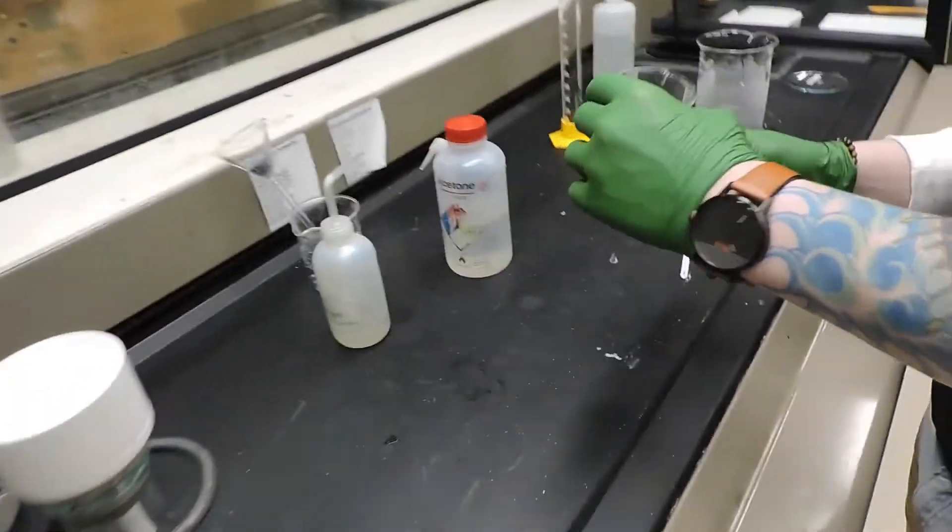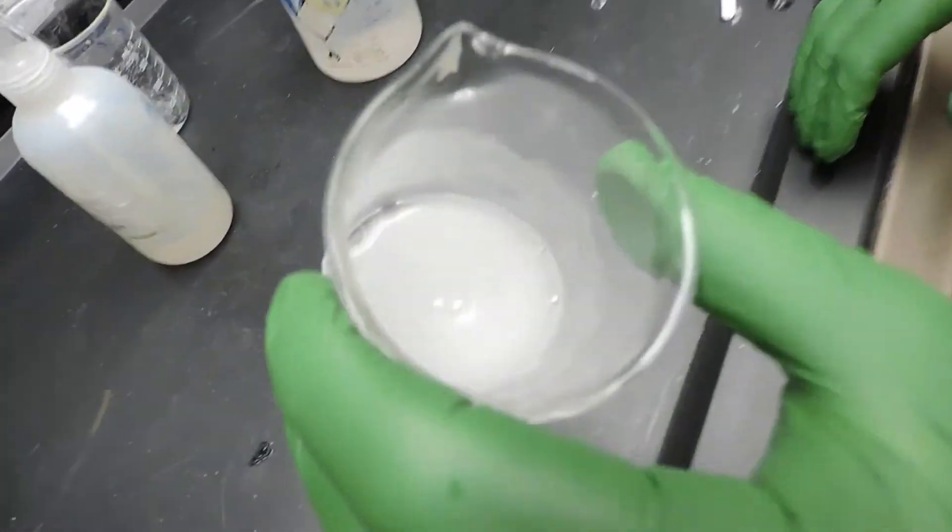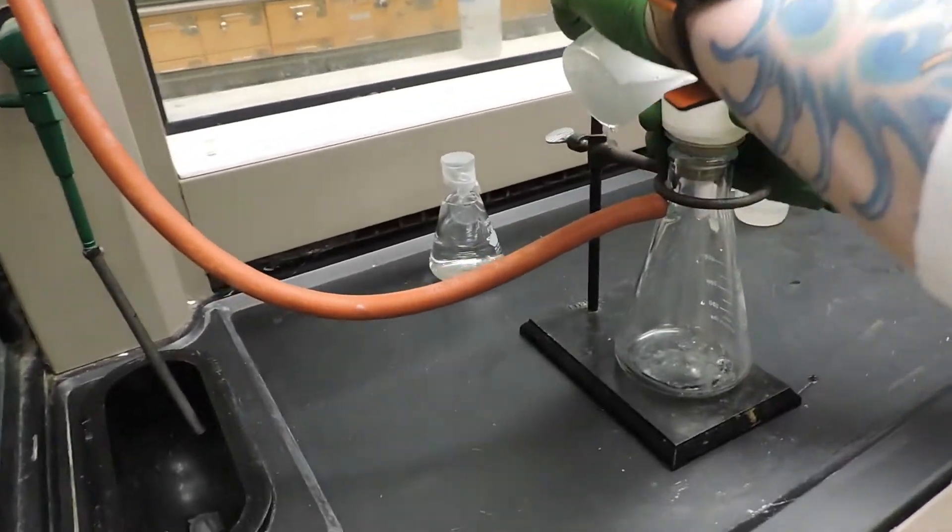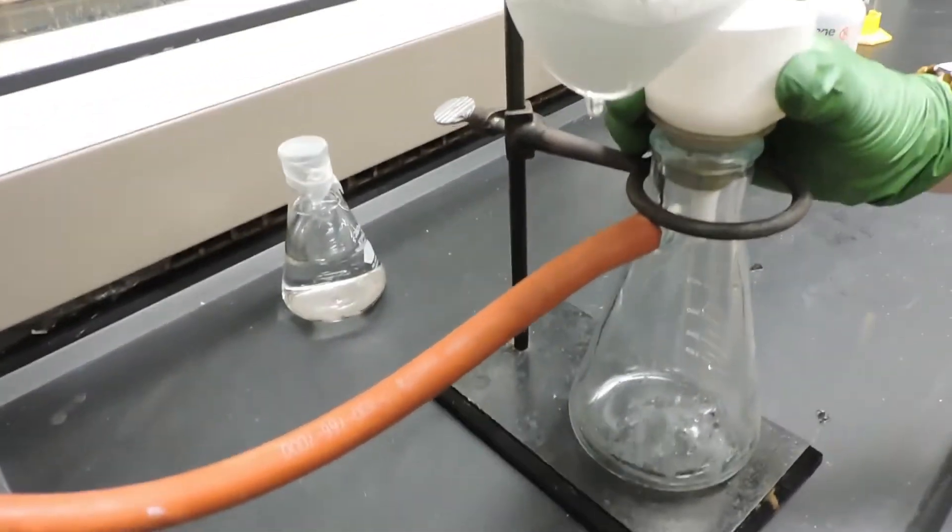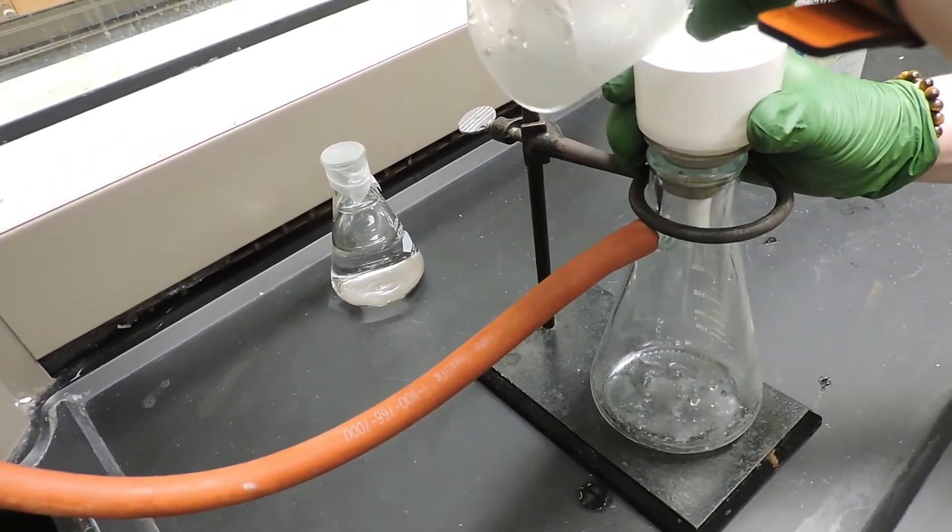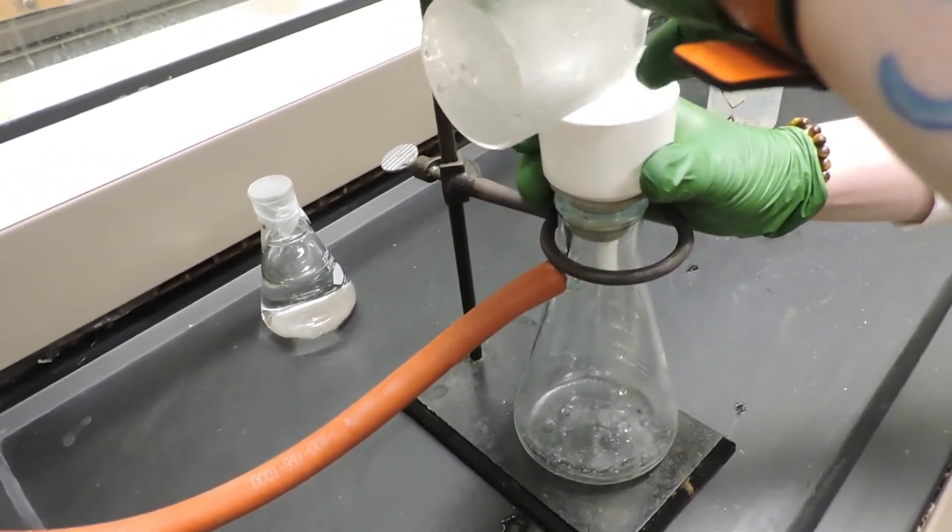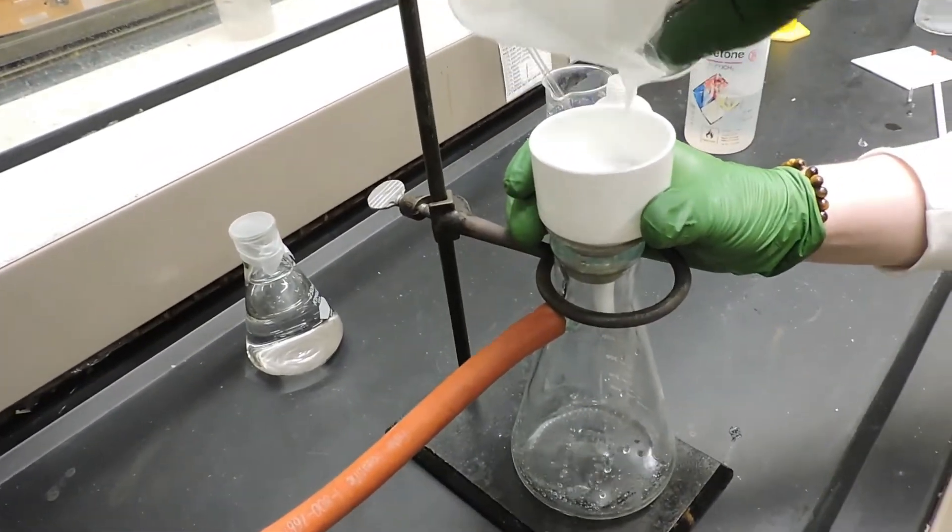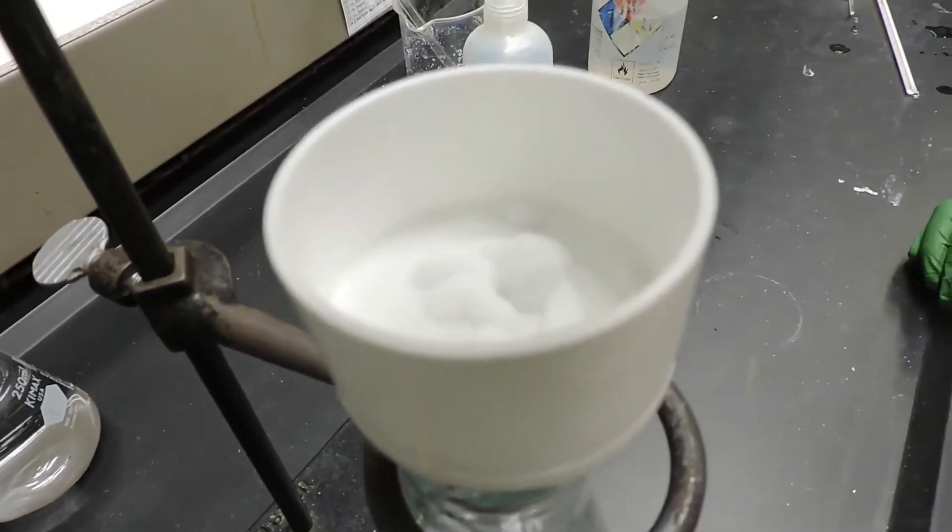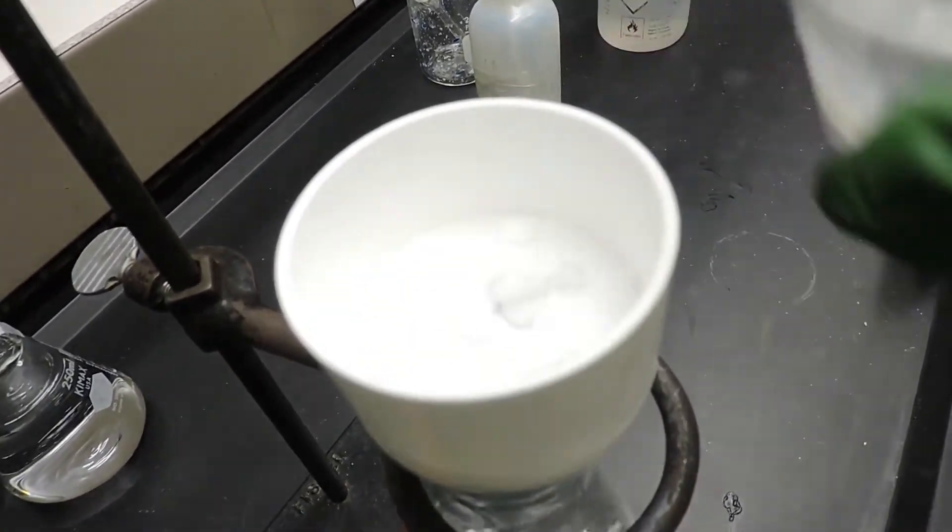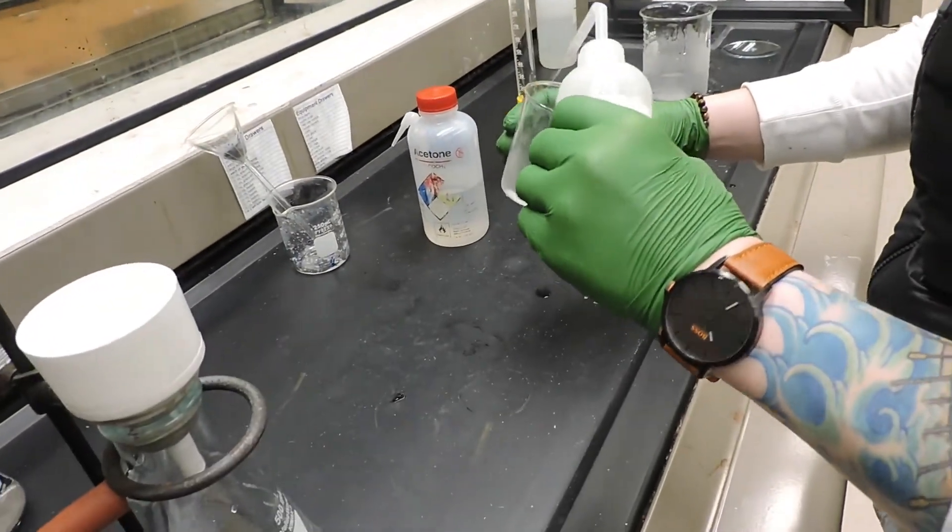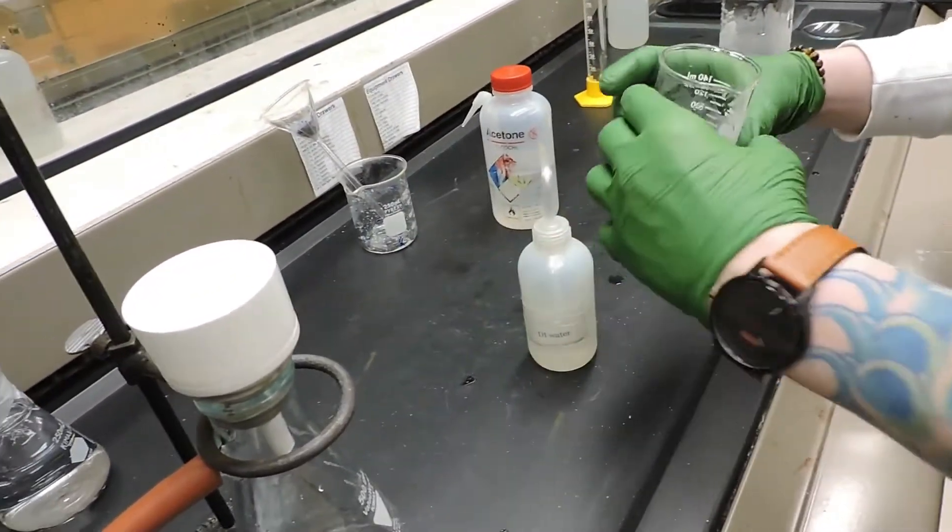Now that we have some crystals in our beaker, you can see, we're going to filter them off using vacuum filtration. And we're going to rinse the beaker with some more DI water to try and get all the crystals that we can.